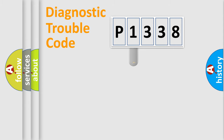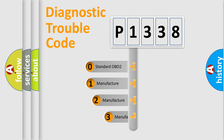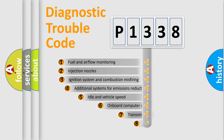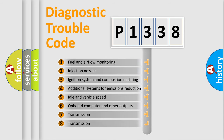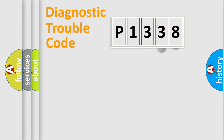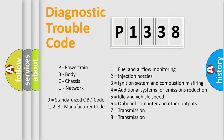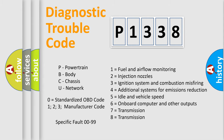This distribution is defined in the first character of the code. If the second character is expressed as zero, it is a standardized error. In the case of numbers 1, 2, or 3, it is a manufacturer-specific error expression. The third character specifies a subset of errors. The distribution shown is valid only for the standardized DTC code, and only the last two characters define the specific fault of the group.